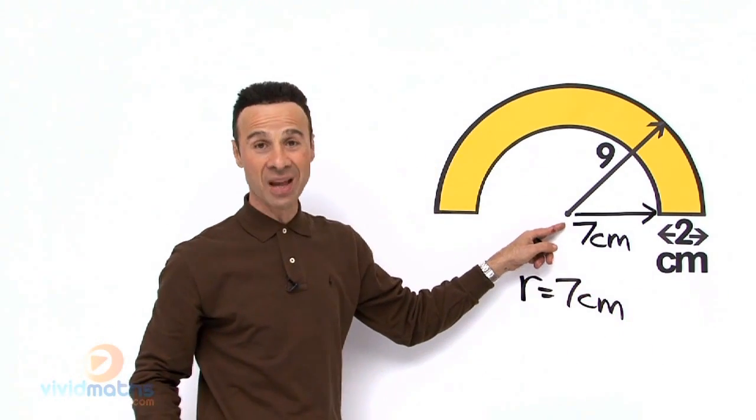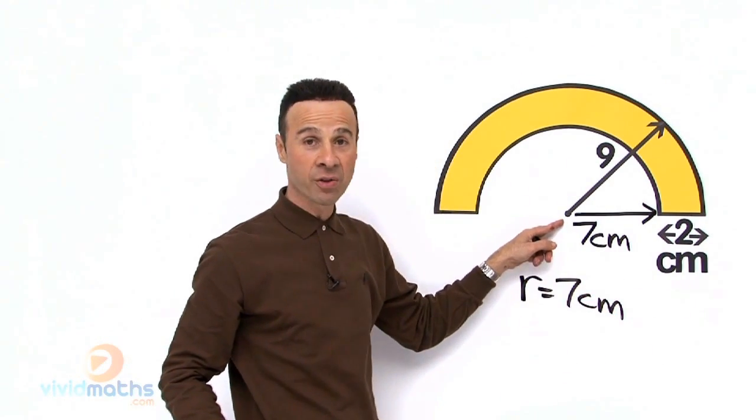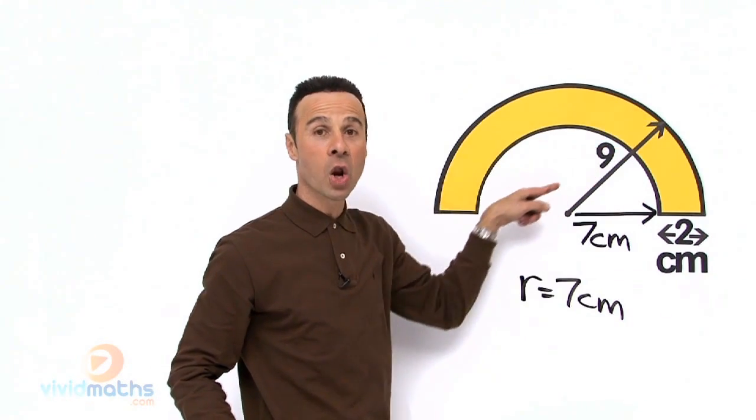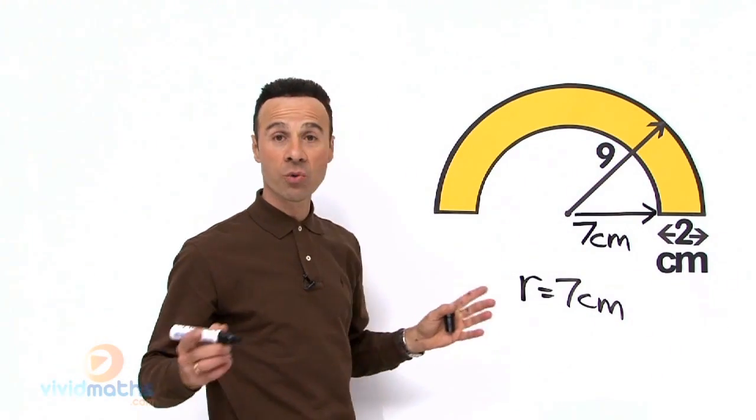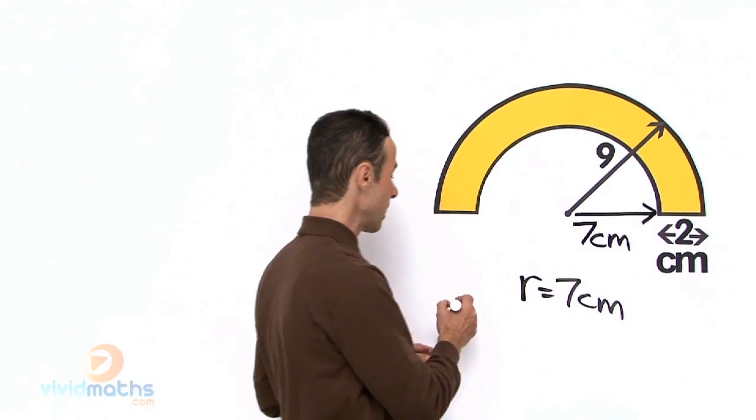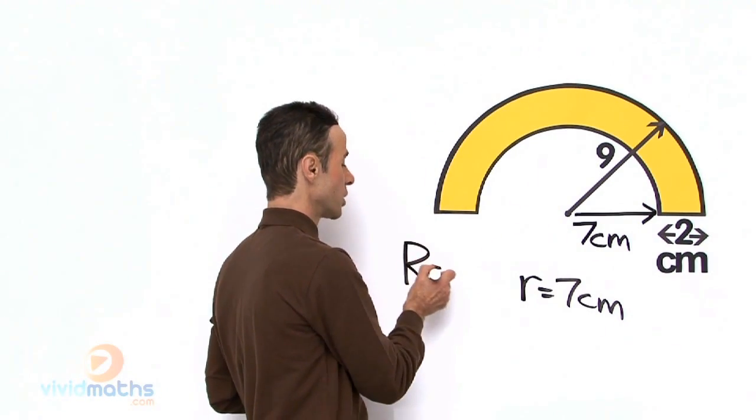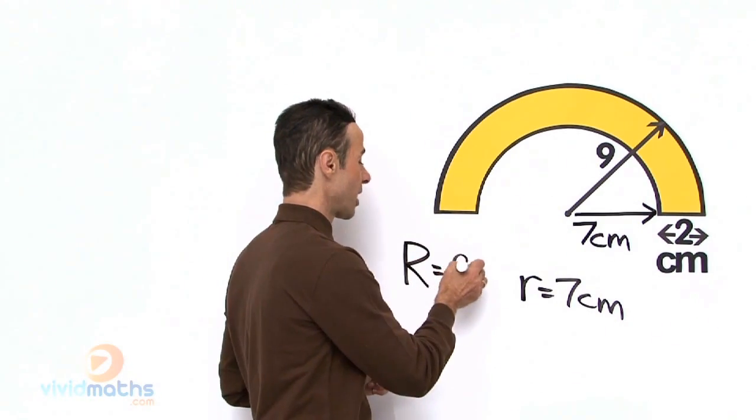Now we know from examining this example, displayed here on the diagram right to the edge there, 9 cm for the outside part of this golden rainbow. So let us write that down, big R which means large radius is 9 cm.